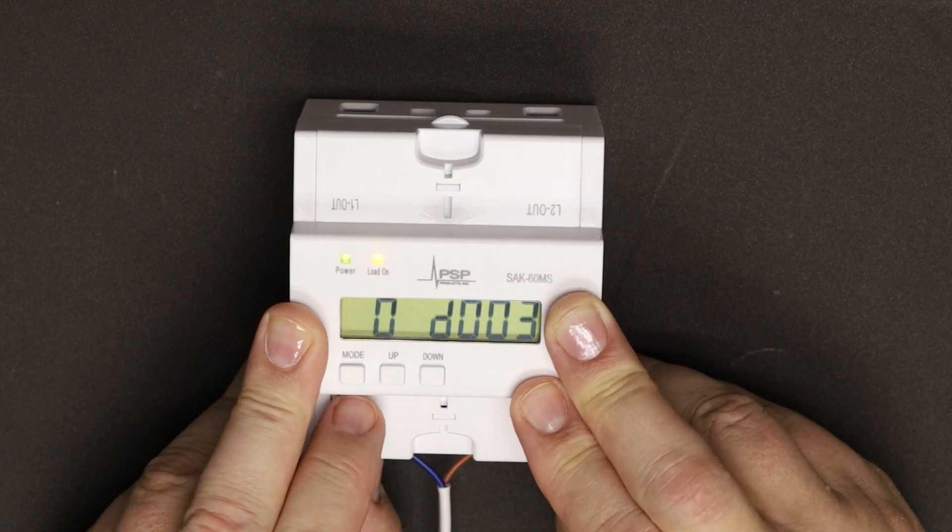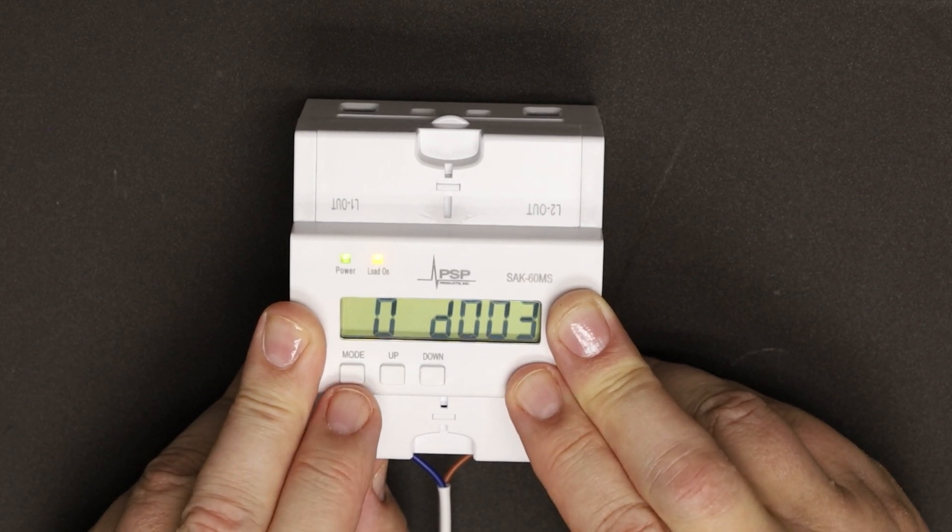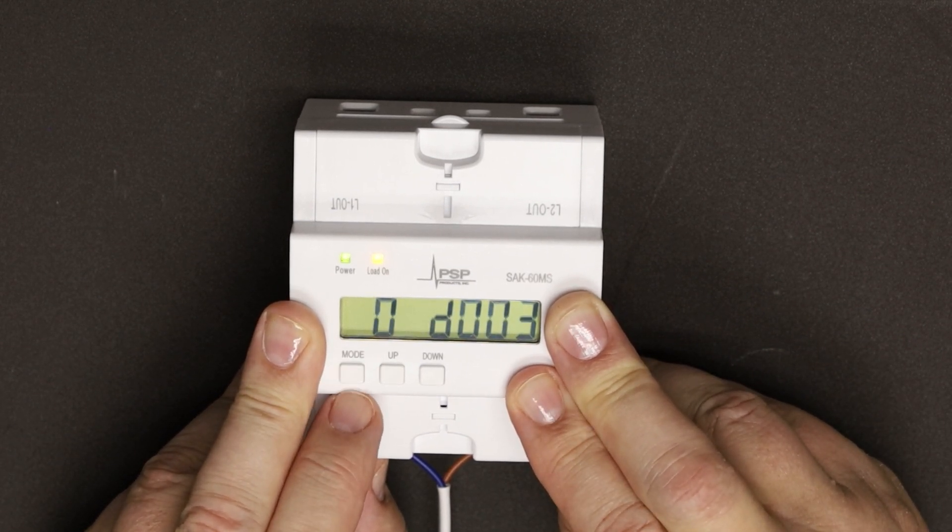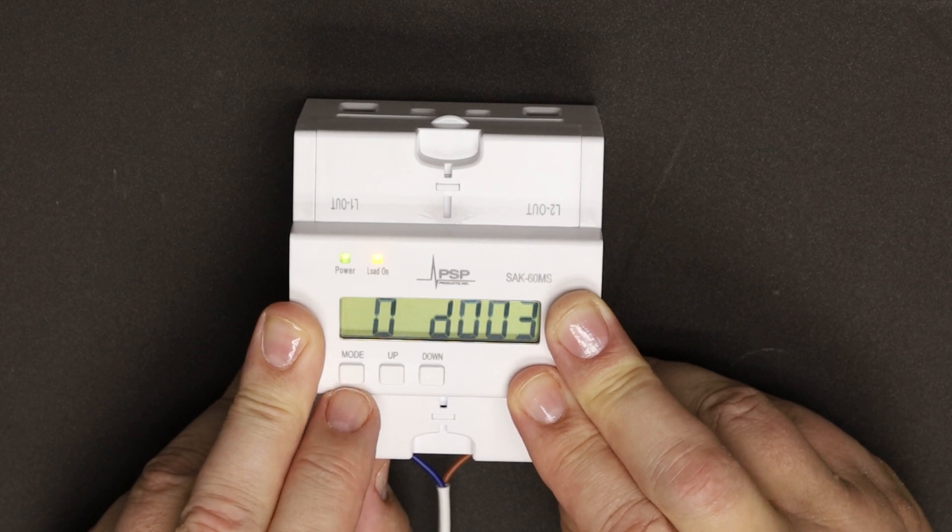OD is the off delay. This is the period of time that the panel will have to be at the high current set point before it sheds the load.